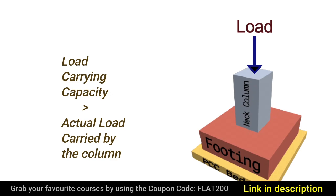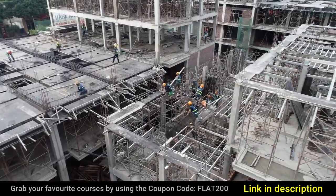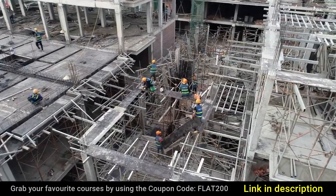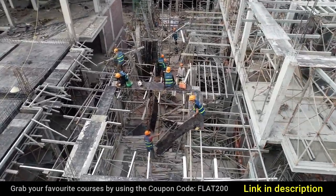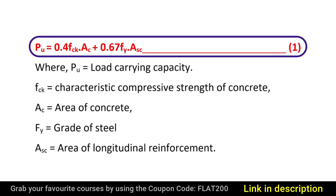The load carrying capacity depends on the cross-sectional area, grade of concrete, grade of steel, and the area of steel provided. To calculate the load carrying capacity, we can use the formula derived from IS 456-2000 clause 39.3, which is given by PU = 0.4 × FCK × AC + 0.67 × FY × ASC, where PU is the ultimate load carrying capacity of the column, FCK is the characteristic compressive strength of concrete, AC is the area of concrete, FY is the grade of steel, and ASC is the area of longitudinal reinforcement.